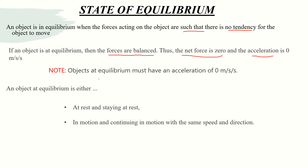Objects at equilibrium must either be at rest or staying at rest, or they must be in motion and continuing in motion with the same speed and direction. These are two conditions for objects at equilibrium.